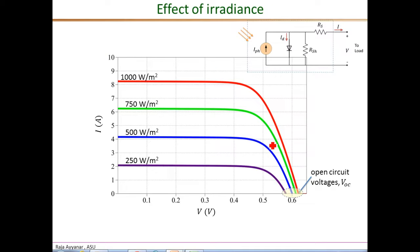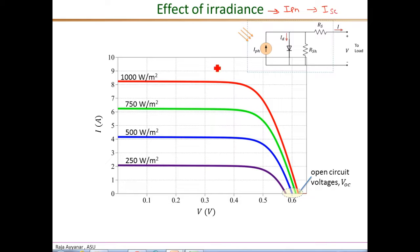First, we will look at the effect of solar irradiance. The irradiance mainly affects the photon current I-PH. In the previous video, we saw that the short circuit current is exactly equal to the photon current under the assumption that the series resistance is very small. So the irradiance mainly affects ISC, the short circuit current. This is shown in this family of I-V characteristics. The red plot corresponds to the maximum irradiance — this is given as the standard test conditions STC in the data sheet — at 1000 watts per square meter.